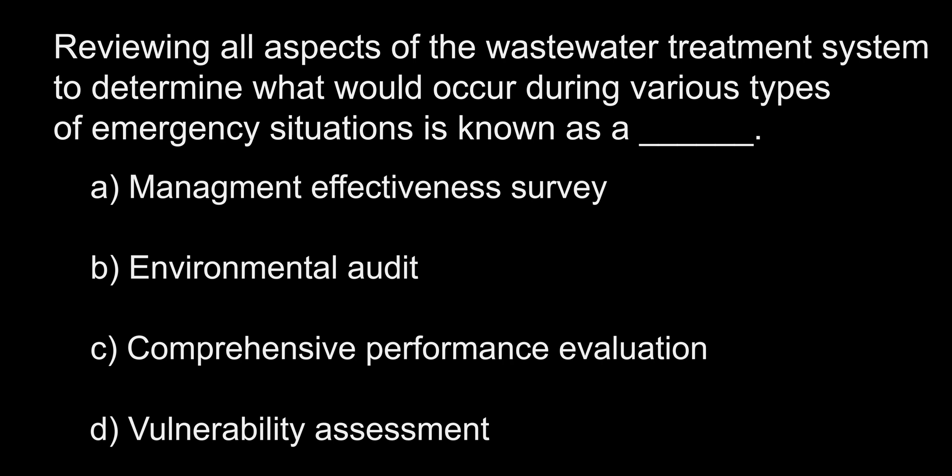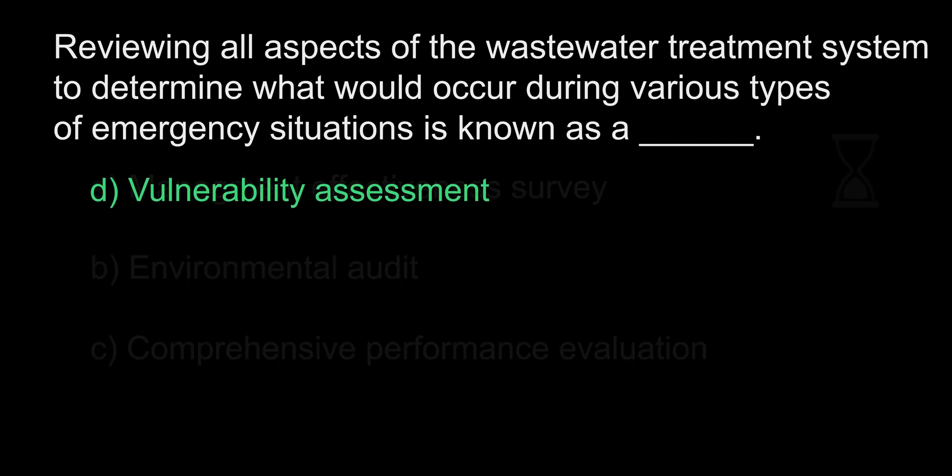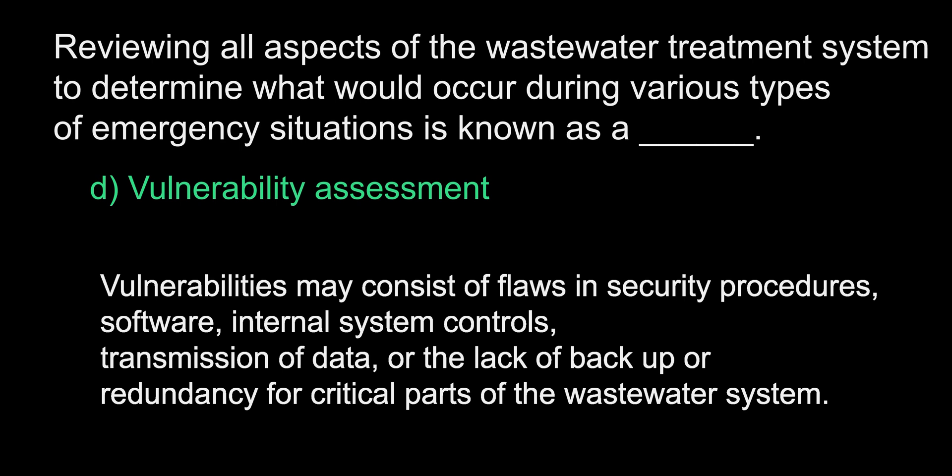Reviewing all aspects of the wastewater treatment system to determine what would occur during various types of emergency situations is known as a blank. A. Management Effectiveness Survey. B. Environmental Audit. C. Comprehensive Performance Evaluation. D. Vulnerability Assessment. The answer is D, vulnerability assessment. Vulnerabilities may consist of flaws in security procedures, software, internal system controls, transmission of data, or the lack of backup or redundancy for critical parts of the wastewater system. Being aware and making sure there is a plan in place for any disruption that could occur is vitally important to operating a treatment plant. This is where vulnerability assessments come in, to acknowledge and figure out what the weakest points are and have a plan in place to address various issues that could arise.